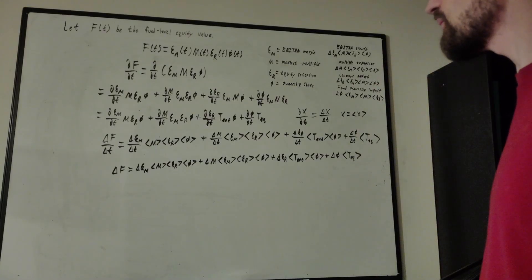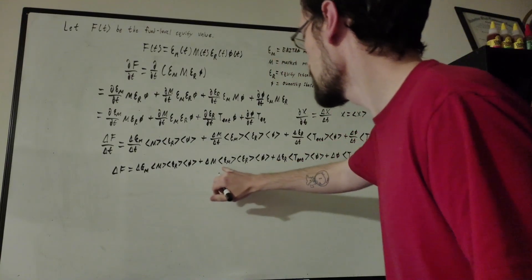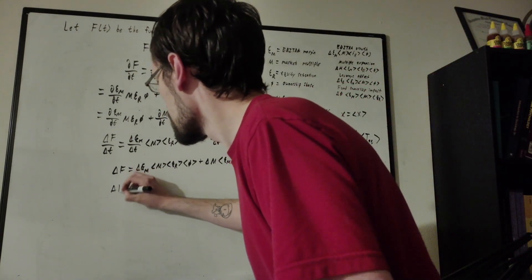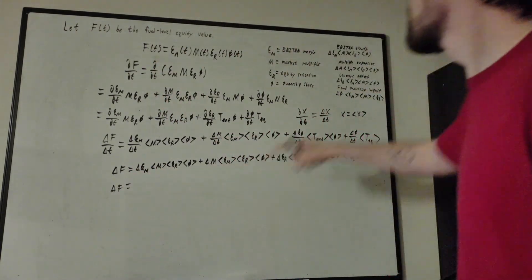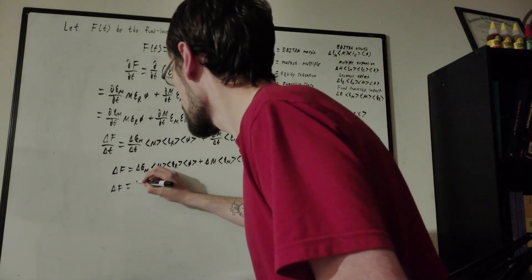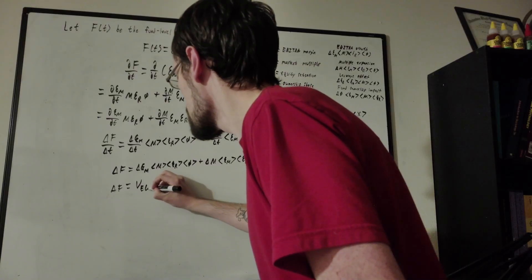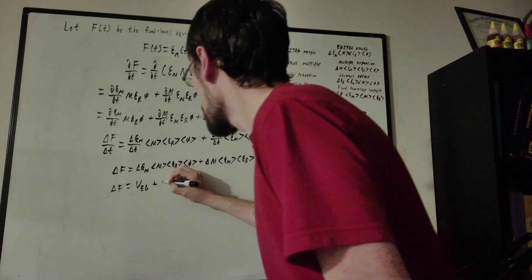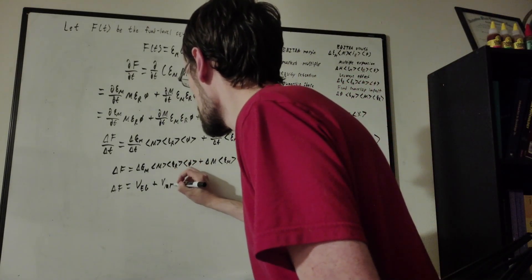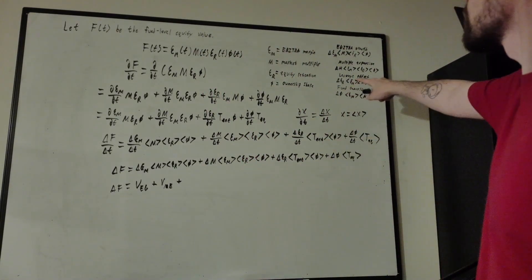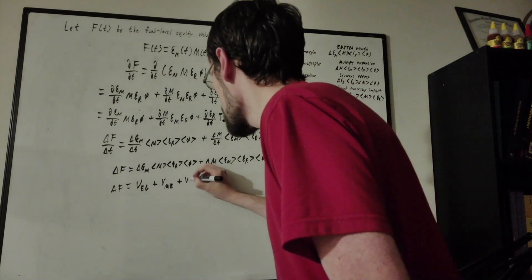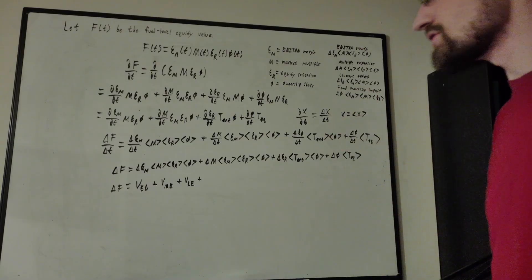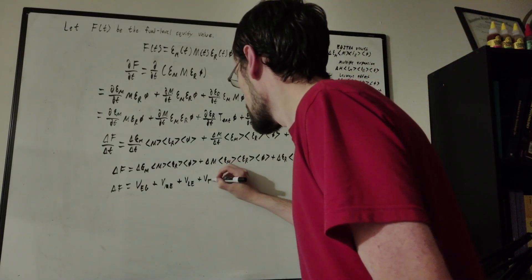So now that we have that, these are four value drivers written in discrete terms. Delta f — this first term — is called EBITDA growth, a value driver denoted v_eg. The second term corresponds to multiple expansion, v_me. The third term corresponds to the leverage effect, v_le. And the fourth term corresponds to fund ownership impact, v_fo.